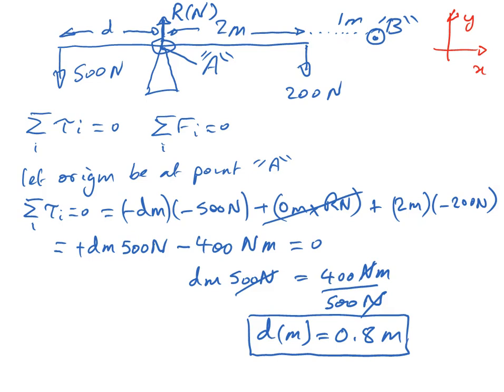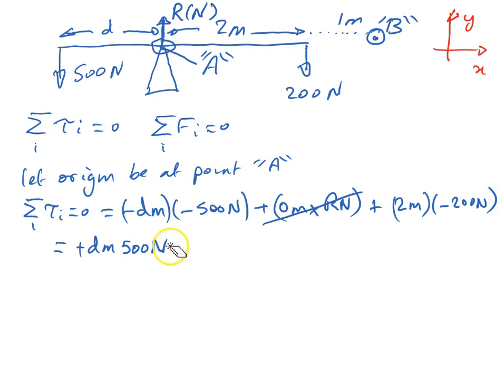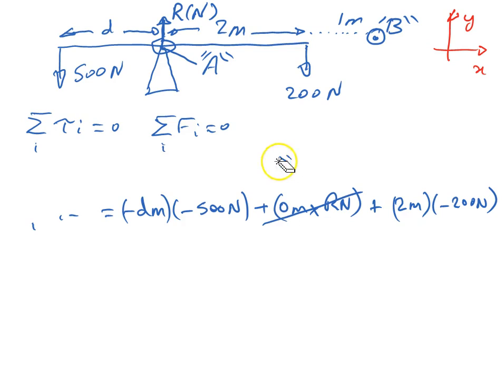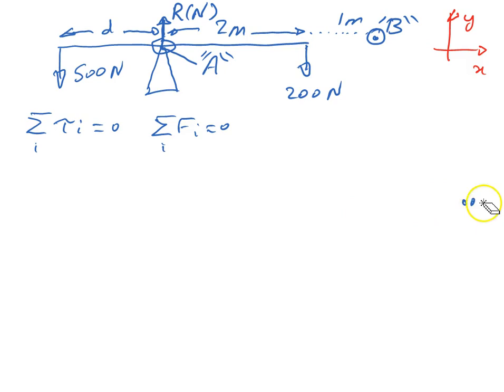So just to be perverse, and to show that it doesn't matter what the choice of origin is, as long as we know what we're doing, I'm now going to redo this problem. Instead of using the origin at point A, which is the sensible choice to minimise work, we will use the origin at point B, which is one metre to the right of the whole kit and caboodle. So, taking origin at point B. Well, what's that going to do to us?